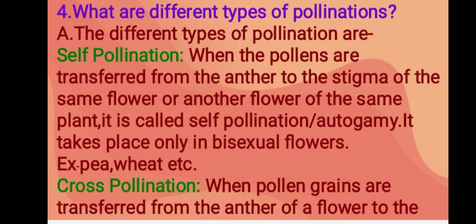The different types of pollination are: self-pollination — when the pollens are transferred from the anther to the stigma of the same flower or another flower of the same plant, it is called self-pollination or autogamy. It takes place only in bisexual flowers.